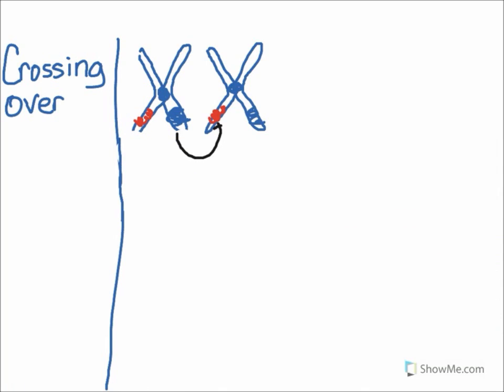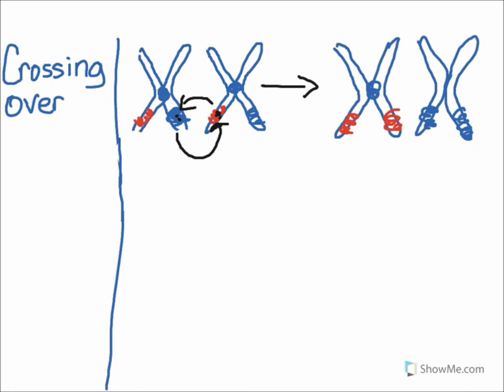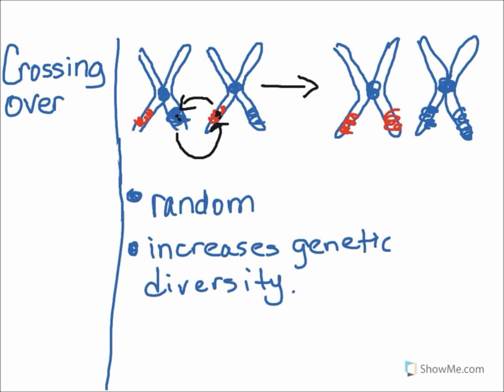During crossing over, the gene from one chromosome actually switches places with the same gene on the other chromosome. So in this case, we have the gene for blue eyes switching places for the same characteristic, eye color, but maybe this is the gene for brown eyes. And what happens is we end up with chromosomes that are not exactly the same. Crossing over recombines or mixes up alleles on the chromosomes. It's random and depends on whether or not the chromosomes are close together, and now that we've mixed up our genes and our alleles.